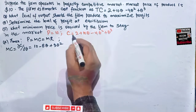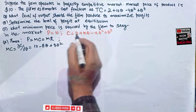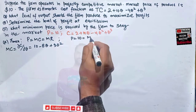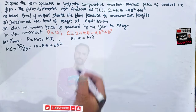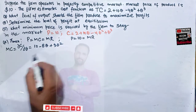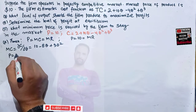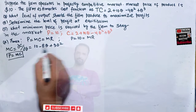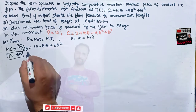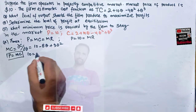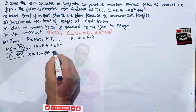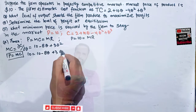So our marginal cost is 10 minus 8Q plus 3Q squared, and price is given as 10, which is also our marginal revenue in perfect competition. Using the condition price equals marginal cost, we set 10 equal to 10 minus 8Q plus 3Q squared.